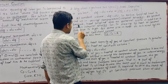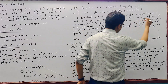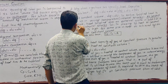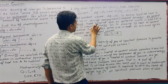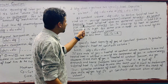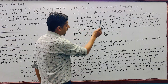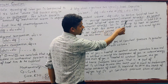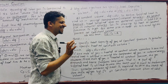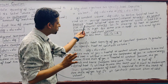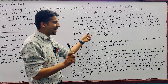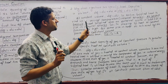At constant pressure, the heat supplied does external work in addition to increasing the internal energy. So more heat is needed for the same temperature rise at constant pressure.